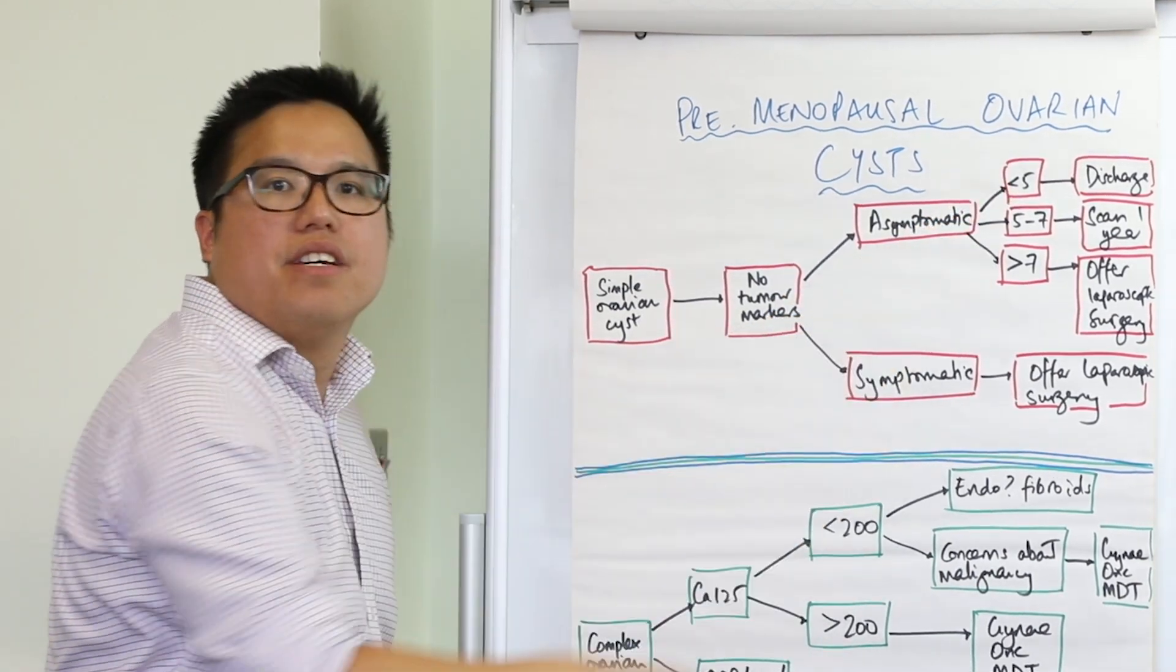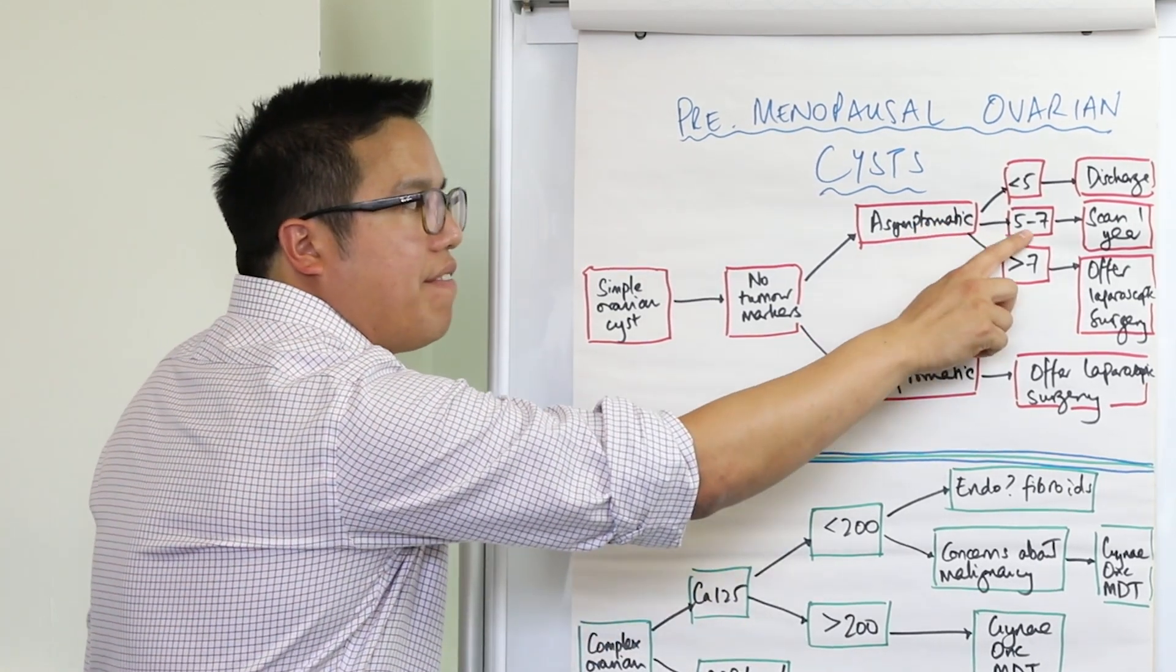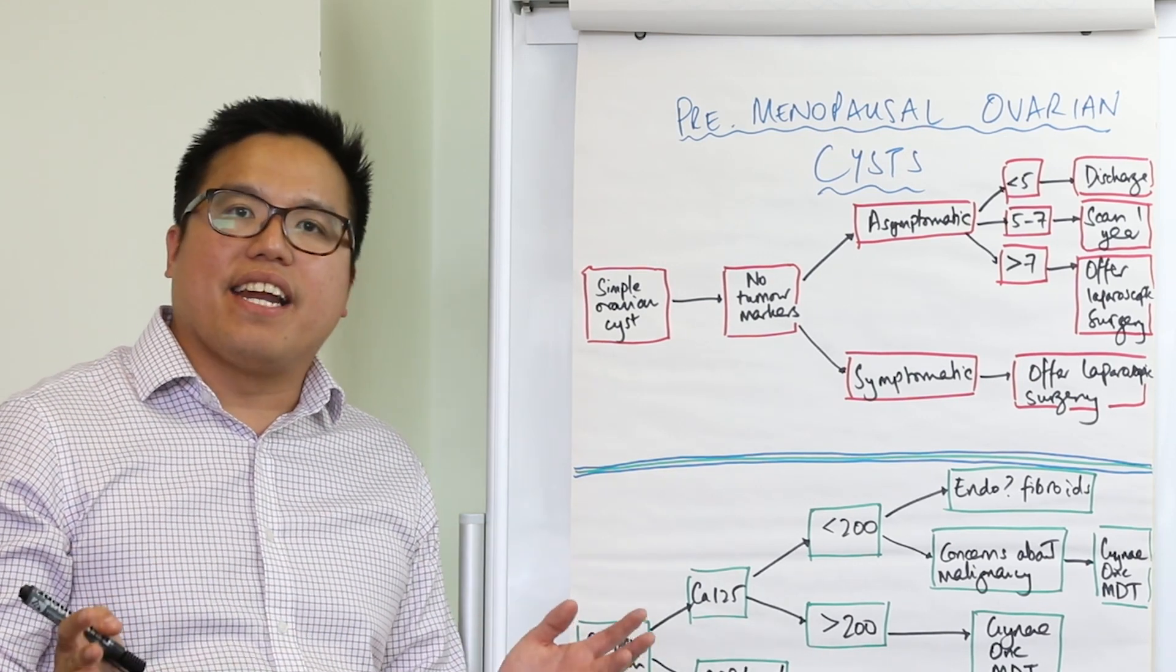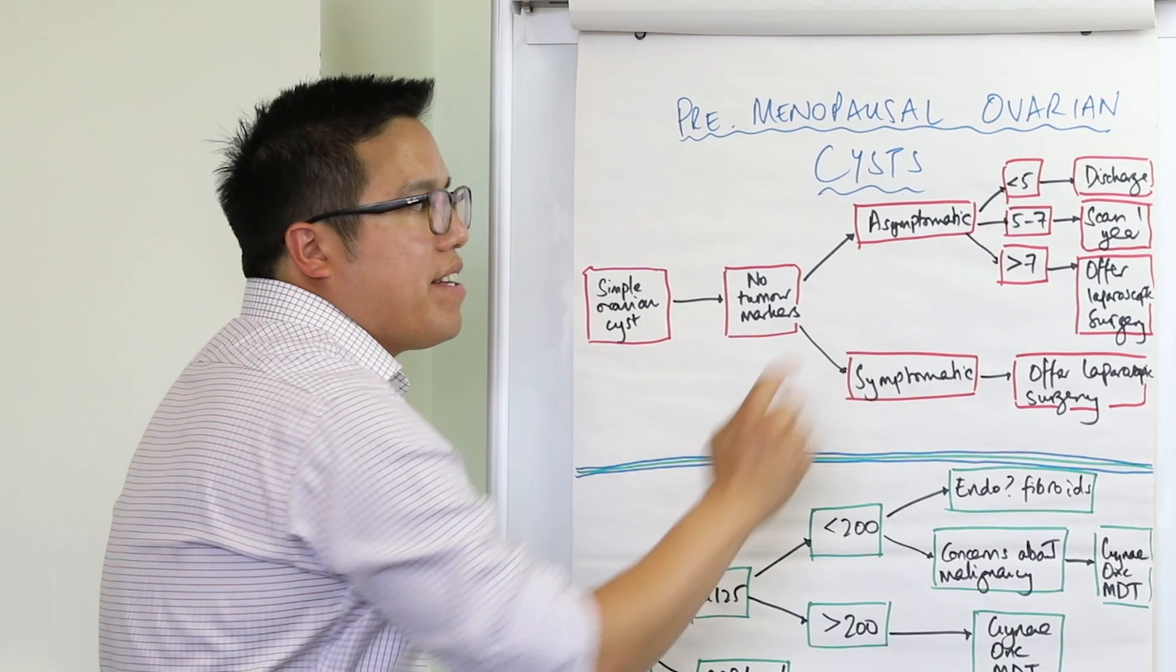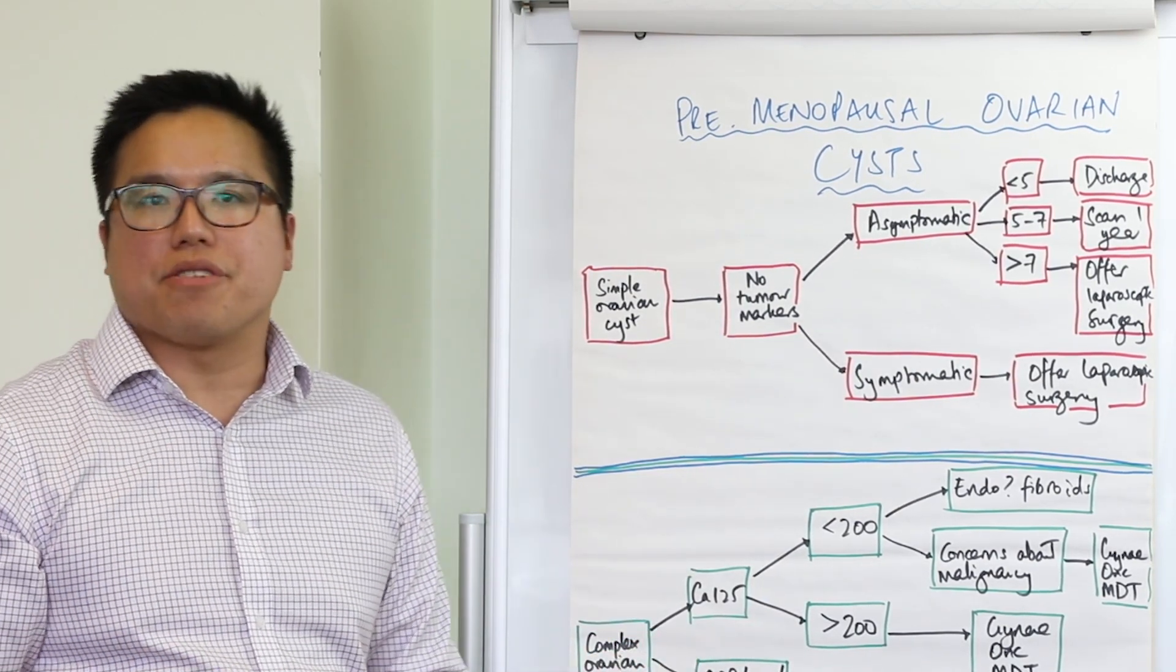Cysts that are less than five centimeters, these women can just be discharged. Cysts that are five to seven centimeters, we would repeat the scan in 12 months. And lastly, ovarian cysts that are over seven centimeters, again here we need to consider laparoscopic surgery.